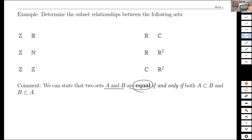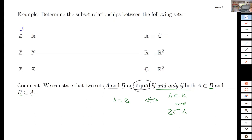Specifically, if two sets are actually equal, then A equals B if and only if A is contained in B and B is contained in A. That's another equivalency: A equals B is the same as A ⊆ B and B ⊆ A. The integers Z are a subset of the reals because every element I can list in the integers is a real number.